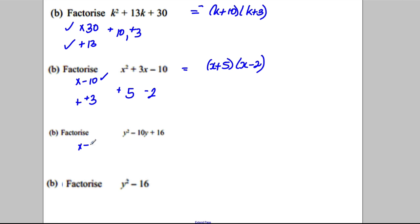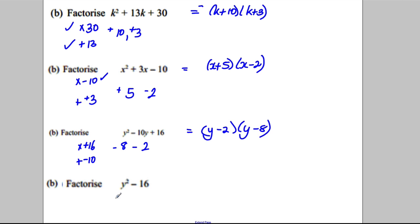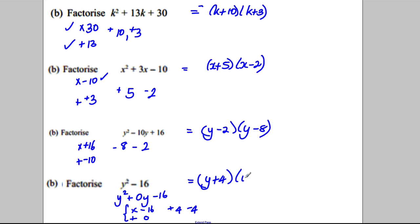Third one: we're looking to multiply to 16 and add up to negative 10. What multiplies to 16? I'm thinking 8 and 2. How can we combine them to get negative 10? Negative 8 and negative 2. So this factorises as (y − 2)(y − 8). Last one: remember to write this as y squared add 0y subtract 16. We're looking to multiply to negative 16 and add up to 0. I'm thinking 4 and 4, where one is positive and one is negative — they multiply to negative 16 and add to 0. So this is (y + 4)(y − 4).